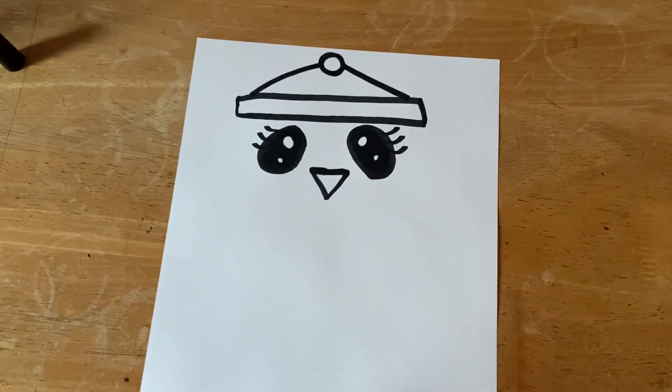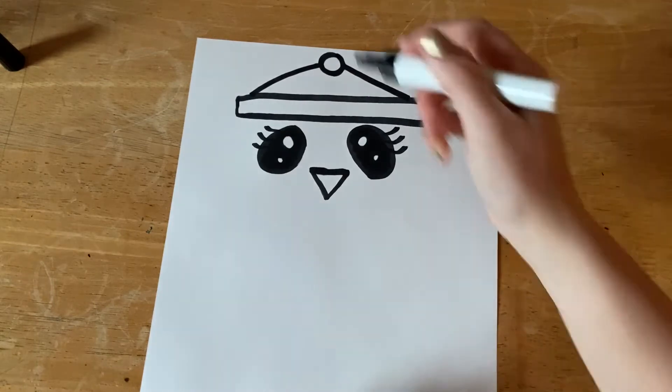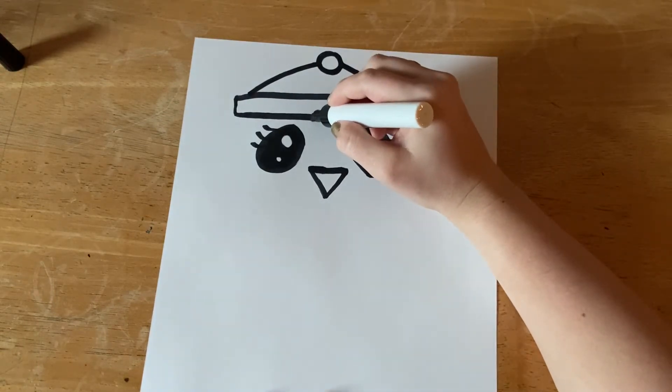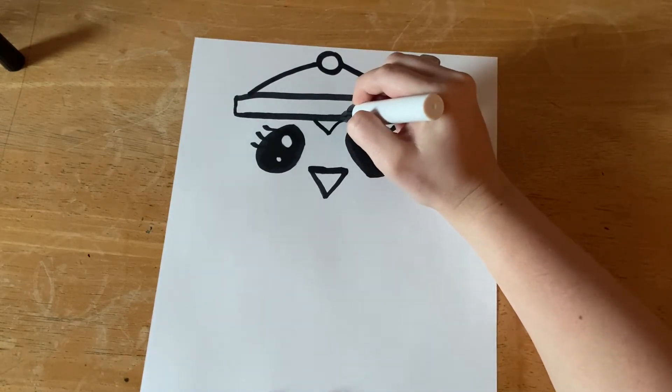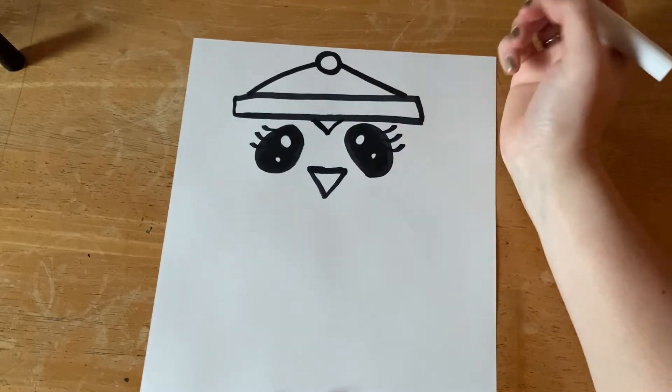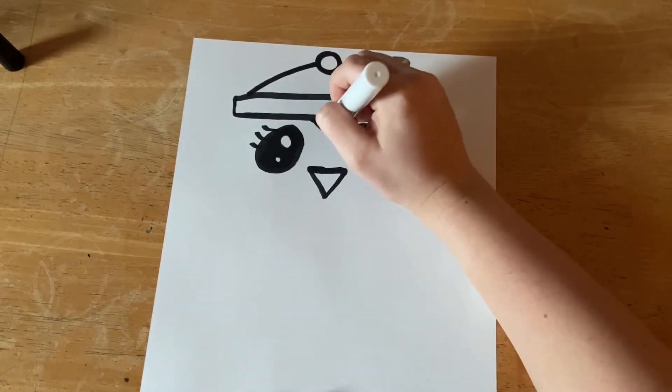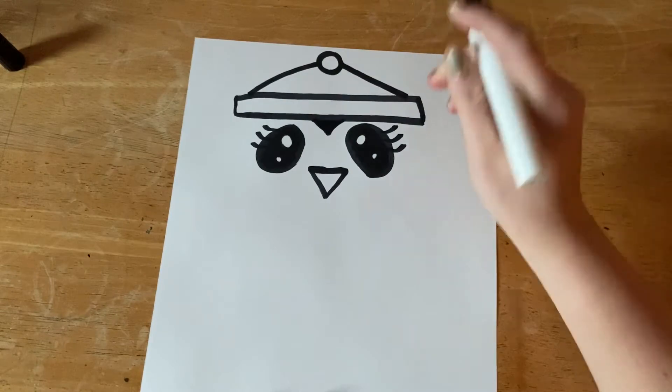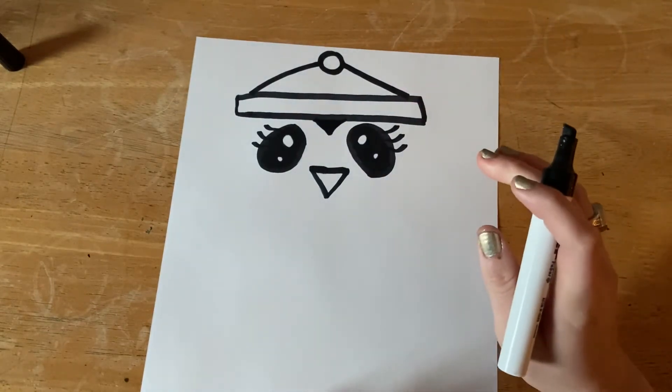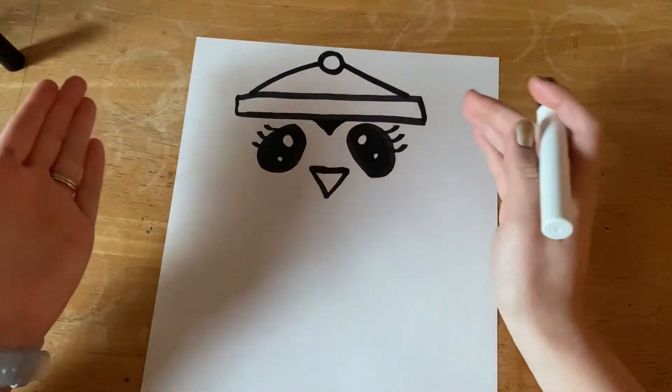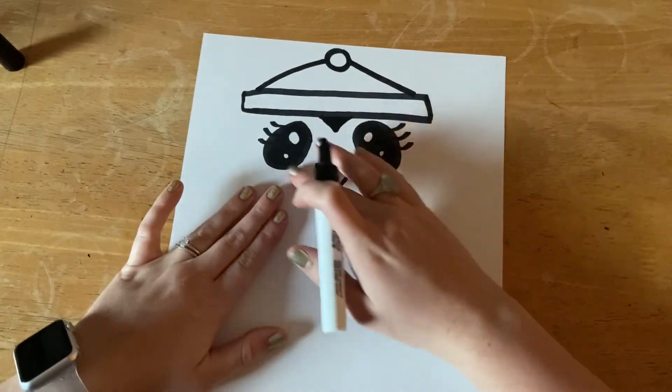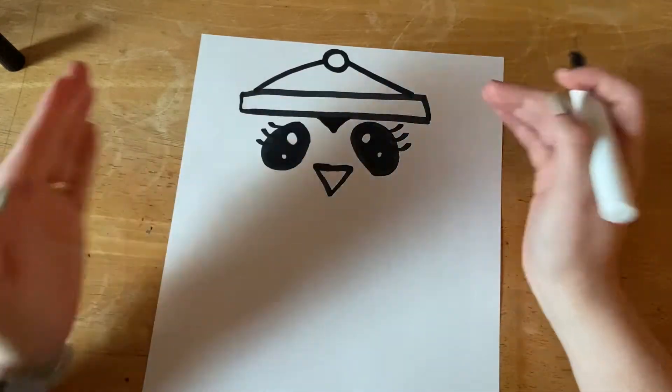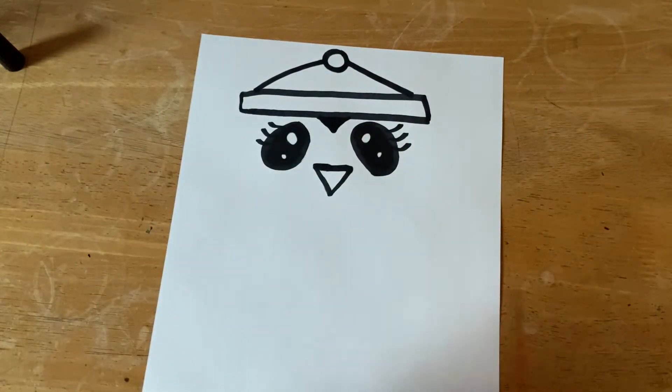All right, next let's draw a V in between the eyes and fill that in. This is going to be the part where the penguin's face is black and white, so the inside is the white part and the outside is the black part. It'll make more sense in a little bit if it doesn't make sense right now.